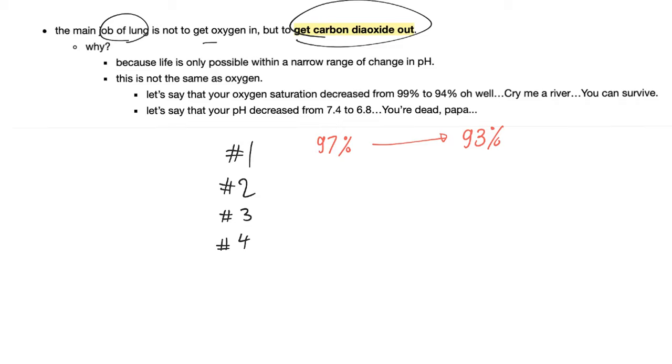And initially, the oxygen saturation was 97 and it dropped all the way to 93%. Oh, big deal. It's not fun. It's not good. But he's not gonna die. On the other hand, let's say that your pH was 7.4, which is normal, and then it dropped to 6.5. You're what's known as dead. What? It's just less than one. Yes. But life is only possible within a very narrow range of pH change. Change the pH too much, either up or down, and you will die. You are only compatible with life between 7 and 7.7 pH. Less than that, you die from acidosis. More than that, you die from alkalosis.